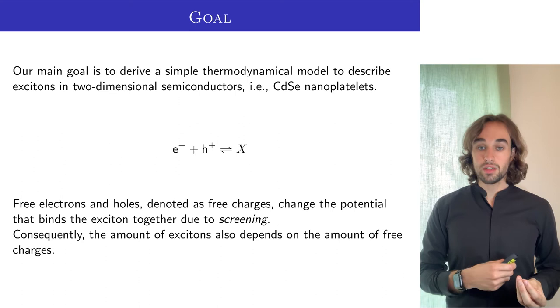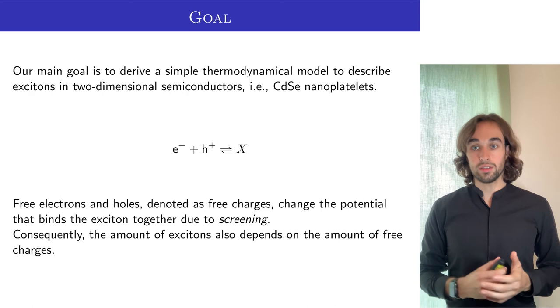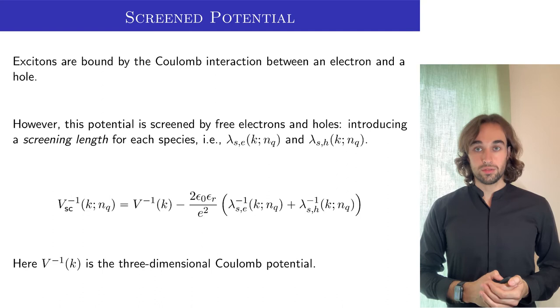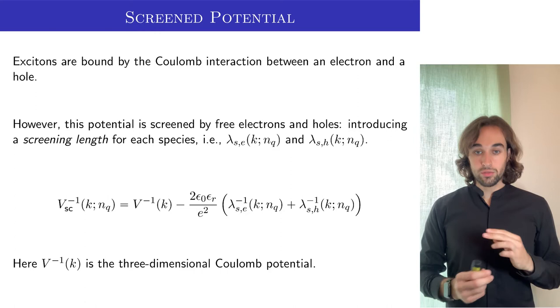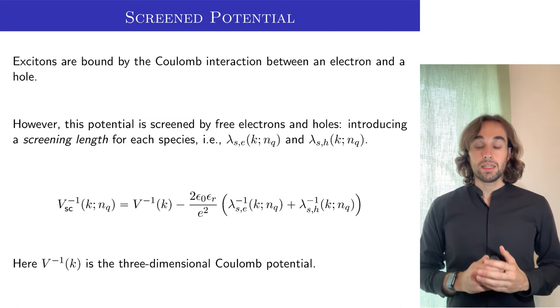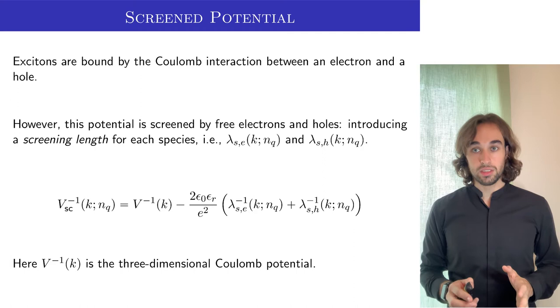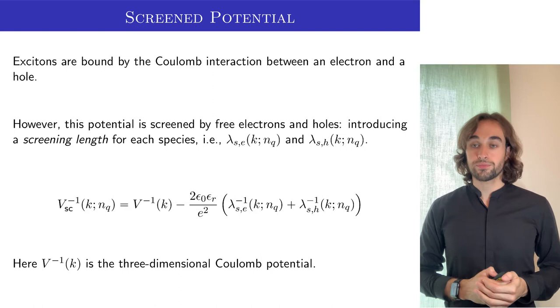Due to this, the binding energy of the exciton changes depending on the density of free charges, and therefore the amount of all of them is coupled together. How exactly can we describe this screening? What we do is by looking at the case of only one electron and one hole bound together in a background of other free charges. This is similar to introducing a screening length for each species into the Coulomb interaction between electron and holes.